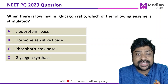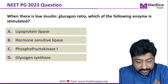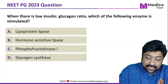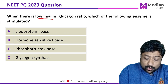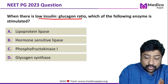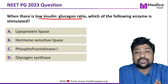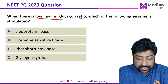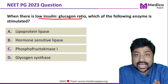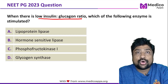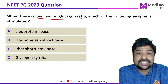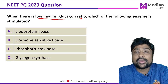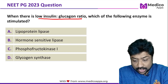This question was asked in NEET PG 2023. The question says that when there is a low insulin to glucagon ratio, which of the following enzymes is stimulated? The options are lipoprotein lipase, hormone sensitive lipase, phosphofructokinase 1, and glycogen synthase.